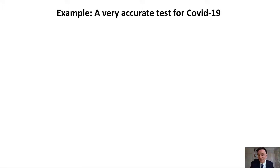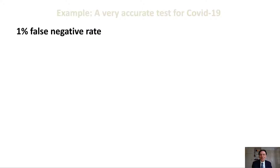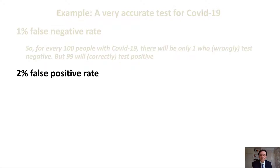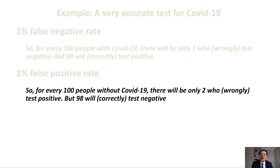I'm not suggesting that such tests exist, but that's good enough for the example. We're going to assume that the test has a 1% false negative rate. That means that for every 100 people with COVID-19, there'll only be one who wrongly tests negative, but 99 will correctly test positive, and that there's a 2% false positive rate. So that means that out of every 100 people who don't have COVID-19, there'll only be two who wrongly test positive, and 98 will correctly test negative.